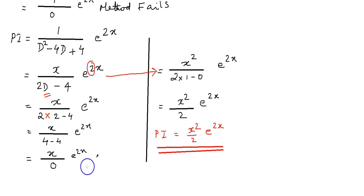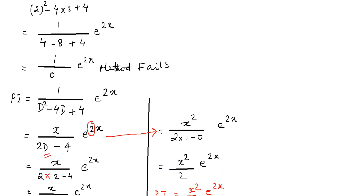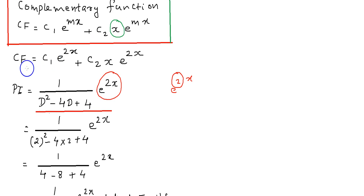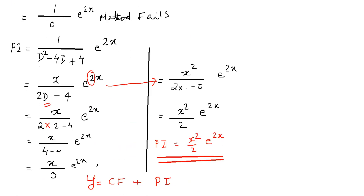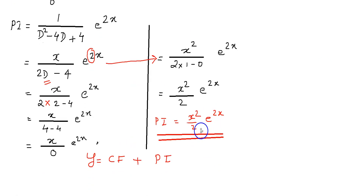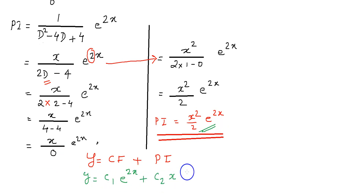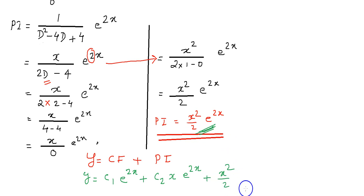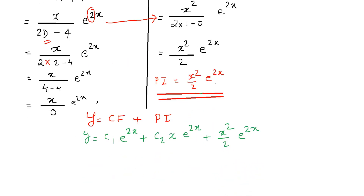We know that y is equal to the sum of complementary function plus particular integral. Therefore y = c₁e^(2x) + c₂x·e^(2x) + (x²/2)·e^(2x).